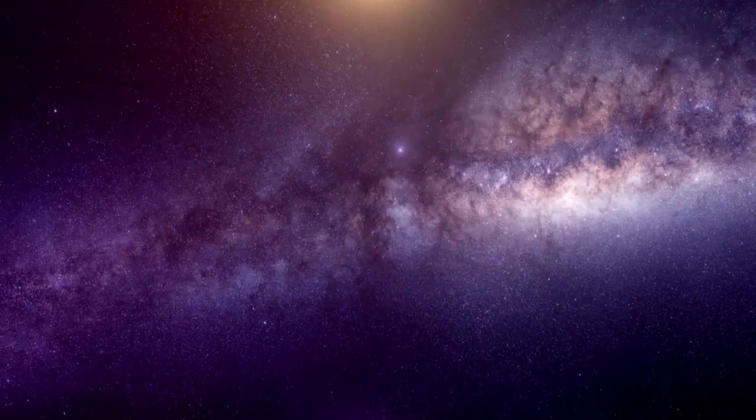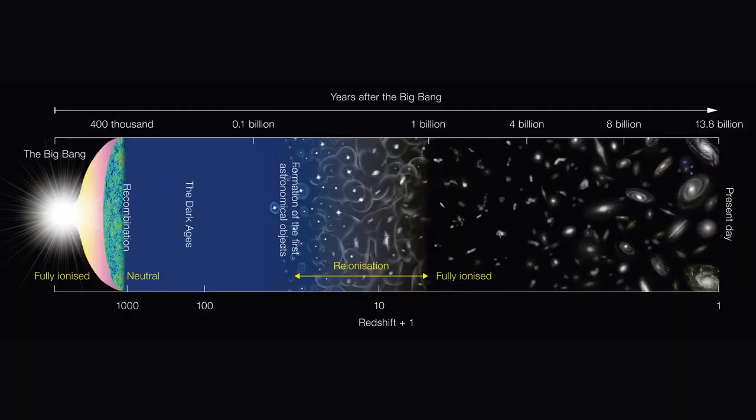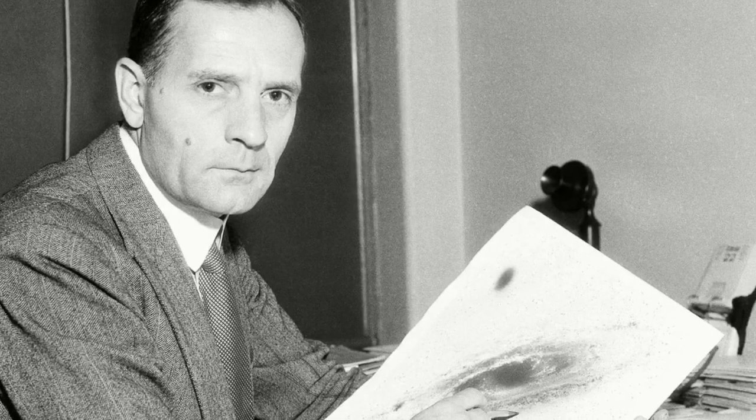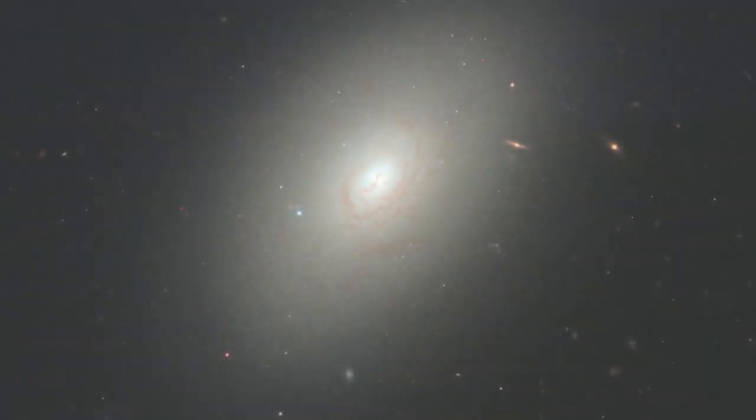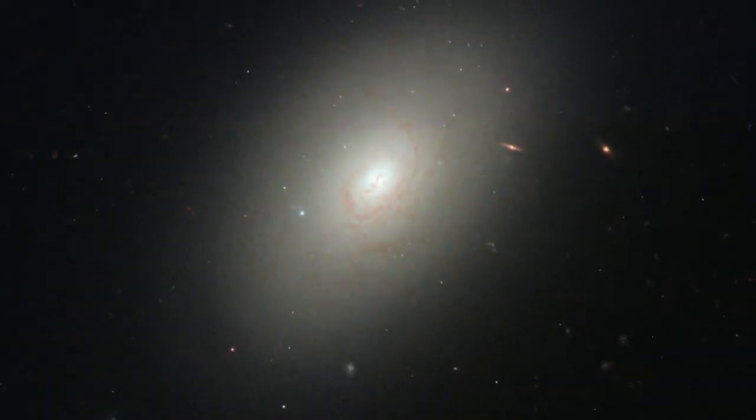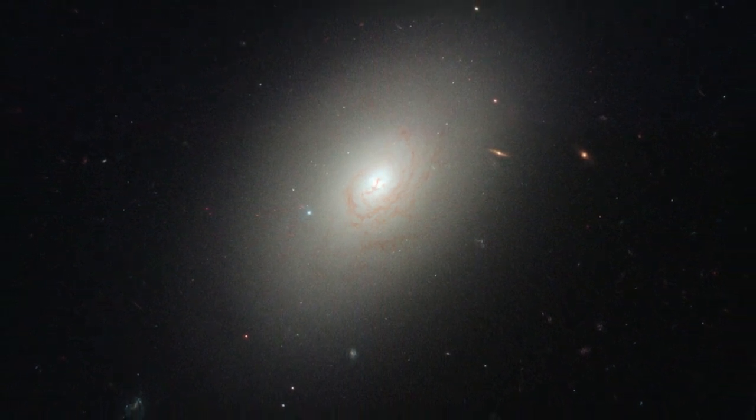As protogalactic clouds evolved and stars formed, galaxies began to develop various shapes and structures. The classification system introduced by Edwin Hubble in 1926 categorizes galaxies into three main types: elliptical, spiral, and irregular. Elliptical galaxies are characterized by their smooth and featureless appearance, consisting of old stars and minimal interstellar gas and dust.